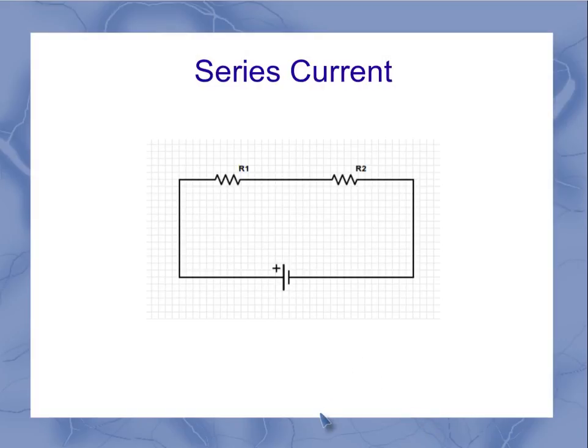Now let's look at the series current. If I look at the current going through that path and think about the current going through resistor 1 and resistor 2, I see that I have exactly the same current going through both resistors, meaning I have an equivalent current which is equal to both current 1 and current 2.